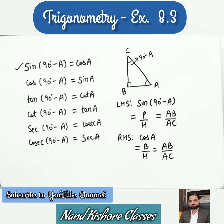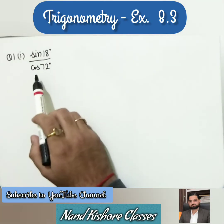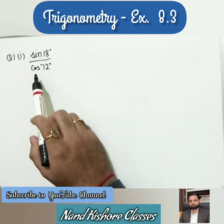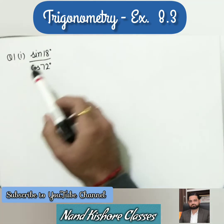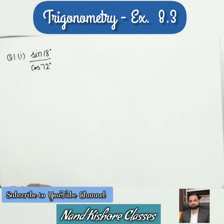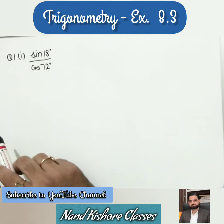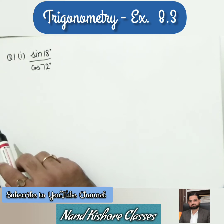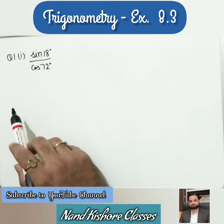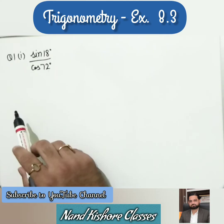We will now start Exercise 8.3 based upon these formulas and implement them. For these types of questions, the key identity is that the two angles add up to 90 degrees — like 72 plus 18 equals 90. Whenever this happens, these complementary angle formulas are to be used.